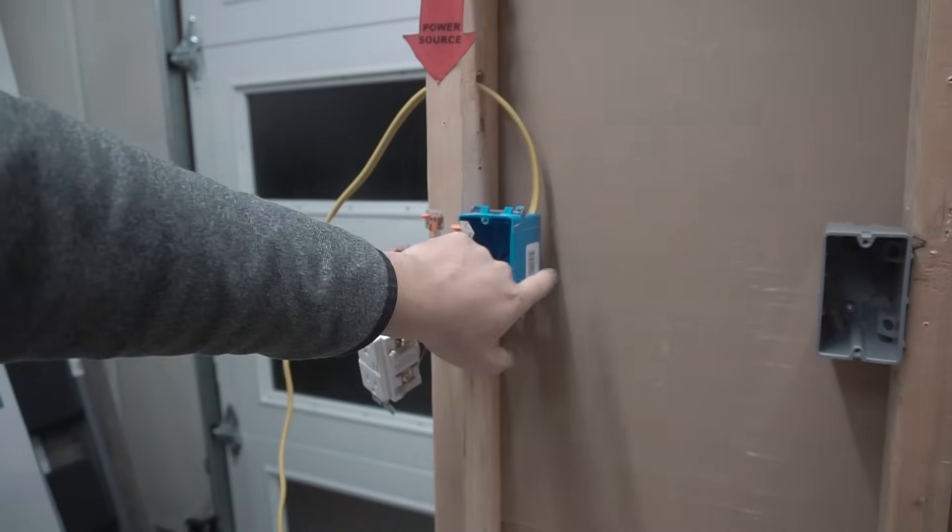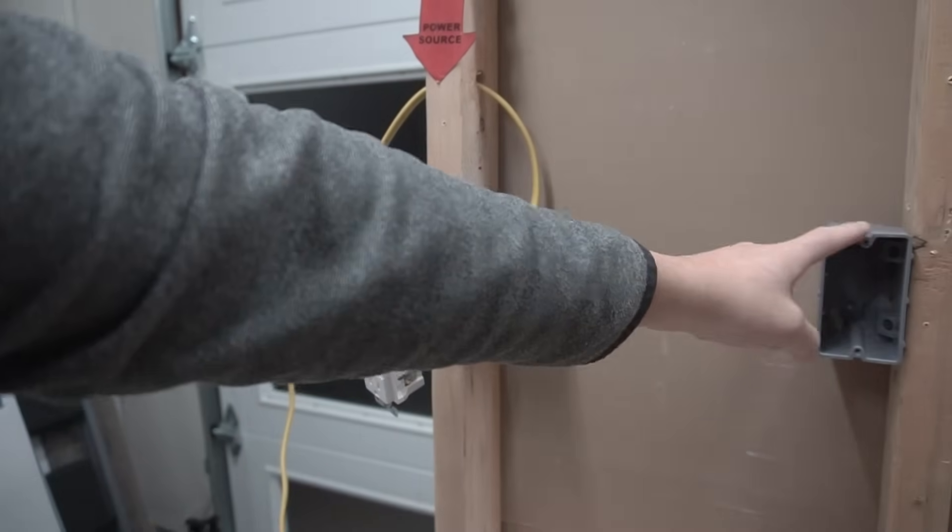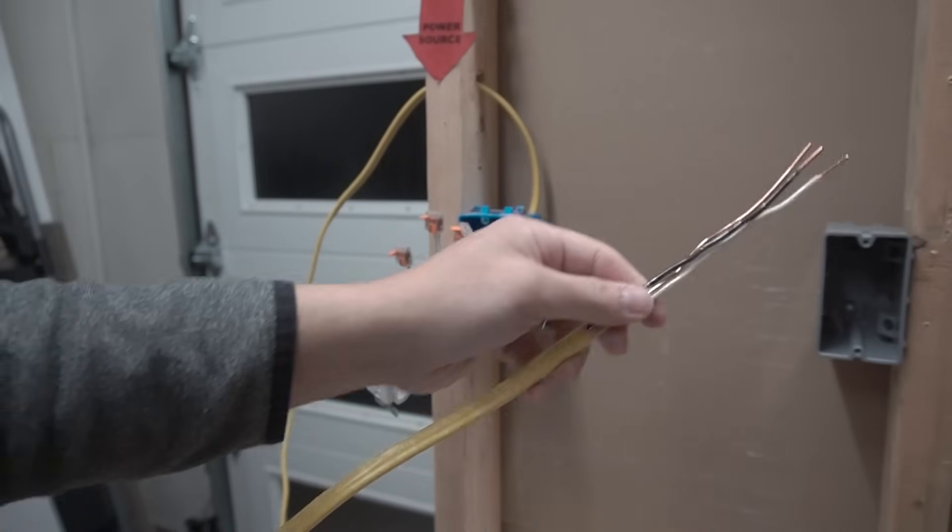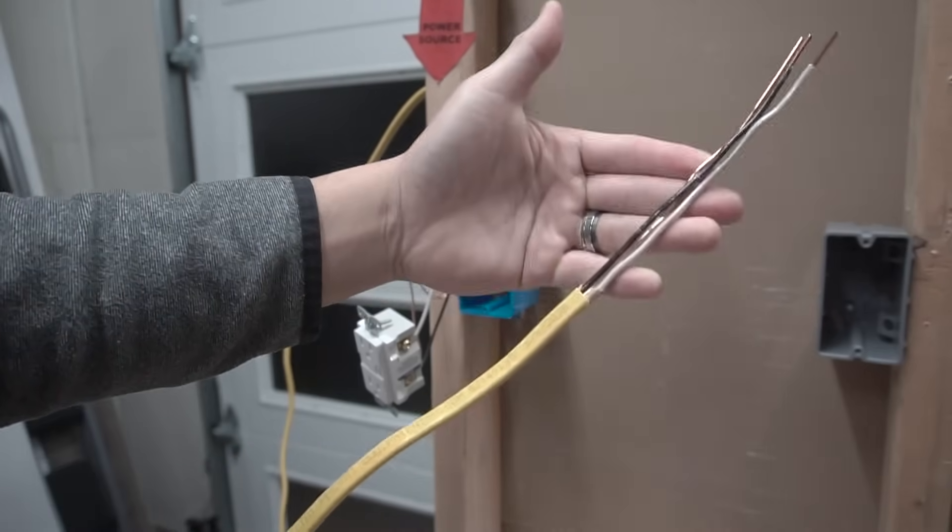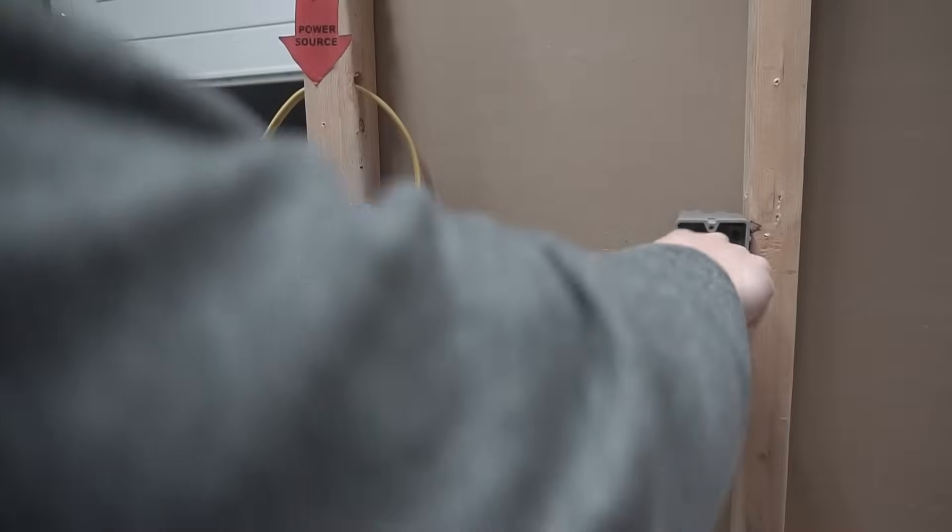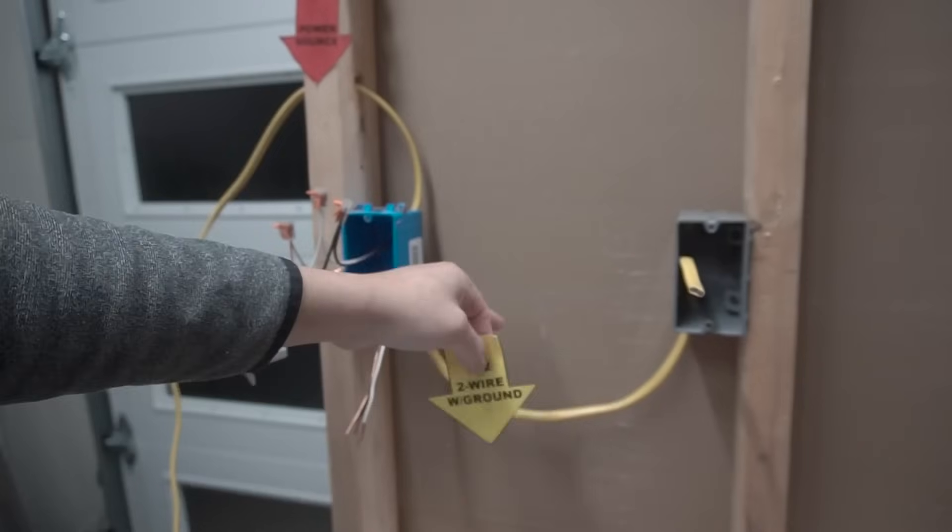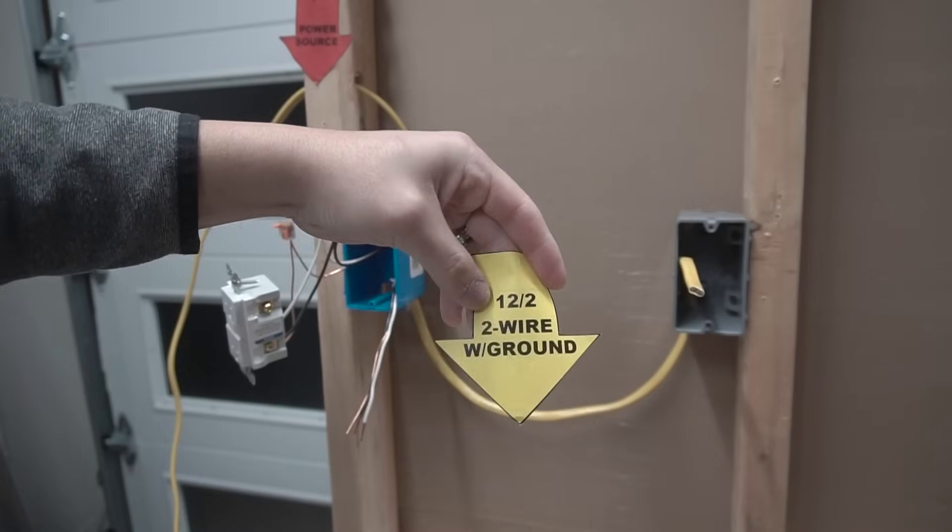which is another 12-2 gauge wire. So we're now going to label this one 12-2 wire with ground.